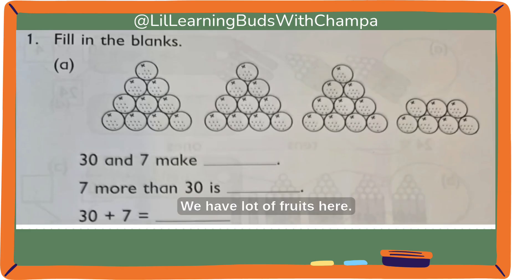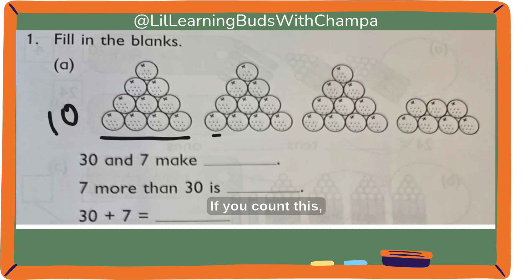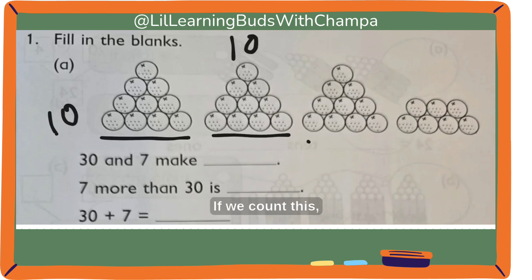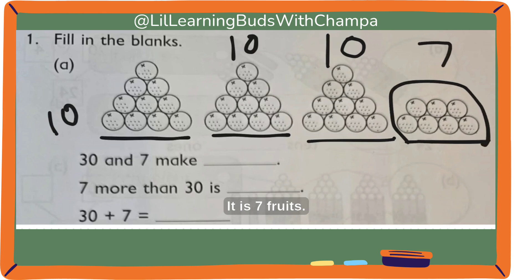We have a lot of fruits here. If we count this, it's a total of 10 fruits. If you count this, it's again 10 fruits. If we count this, we have 10 fruits. If we count this pile, it is not 10 — it is 7 fruits.